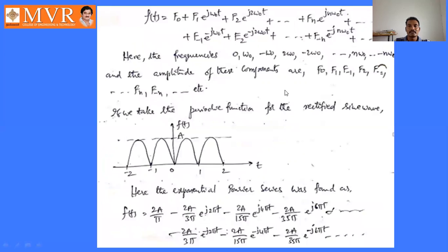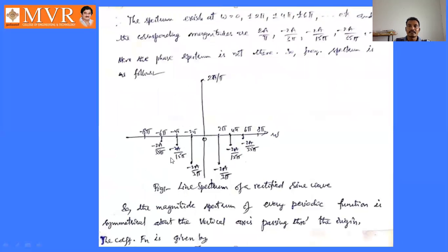There is no phase spectrum here because it is an even function. Looking at the waveform of the full wave rectifier, this is a symmetric even function. An even function satisfies f(t) = f(−t). For even functions there is no phase spectrum, which is why we only have the amplitude spectrum here.